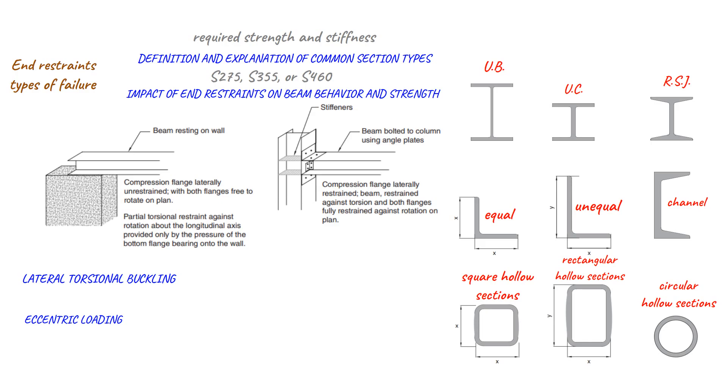Lateral torsional buckling is a type of instability that can occur when a beam is subjected to bending and torsional loads. If there is no lateral restraint on the flanges of the beam, it may experience lateral torsional buckling, which can lead to failure.